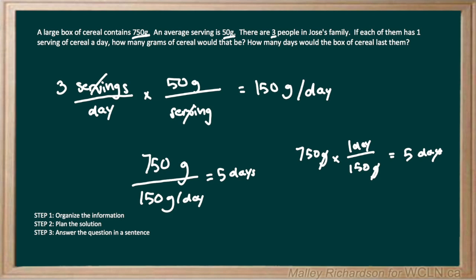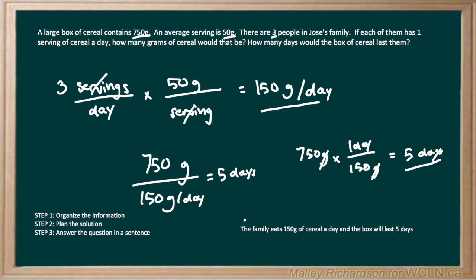So now that we have our two answers of 150 grams per day and 5 days, we have to put our answer in the form of a sentence, which can look something like this. We have the family eats 150 grams of cereal a day and the box will last 5 days. We have our units of grams and days, and we have answered our question in the form of a sentence. So therefore, we are done with our word problem.